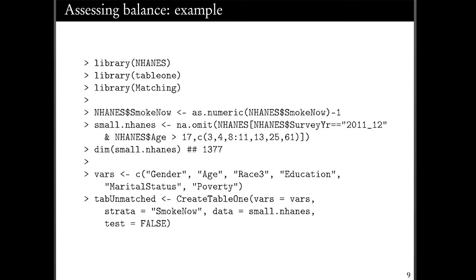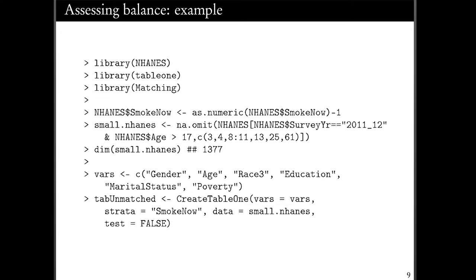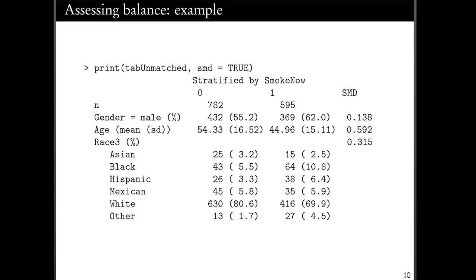I'm creating a list of the variables whose balance statistics I want to present. While I do use household income, I'm not going to present it, so it's not in this list. Using the tableone package, there's a function called 'CreateTableOne' which does the tedious work for me. It takes the variable names I've specified, I tell it how to stratify — looking at smokers and non-smokers — which dataset to use, and I tell the function I don't want any t-tests or other significance tests. The output gives me a reasonably tidy table one with non-smokers and smokers, and it also provides the standardized mean difference statistic.